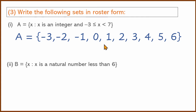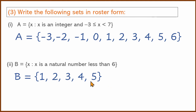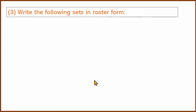Second: x is a natural number less than 6. Natural numbers are 1, 2, 3, 4... So the correct answer listing numbers less than 6 is: 1, 2, 3, 4, 5.